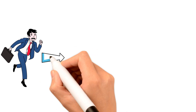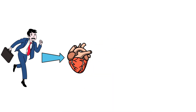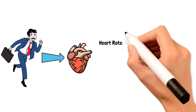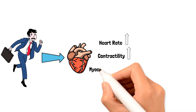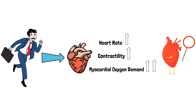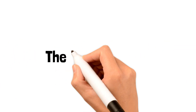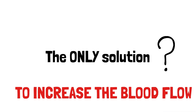During times of physical exertion like running, there is an extra surge of sympathetic activity to myocytes, which leads to an increase in heart rate and contractility, and ultimately a several-fold increase in the myocardial oxygen demand. This leaves your heart in dire need for more oxygen. The only way to meet that demand is to increase the blood flow to the heart.